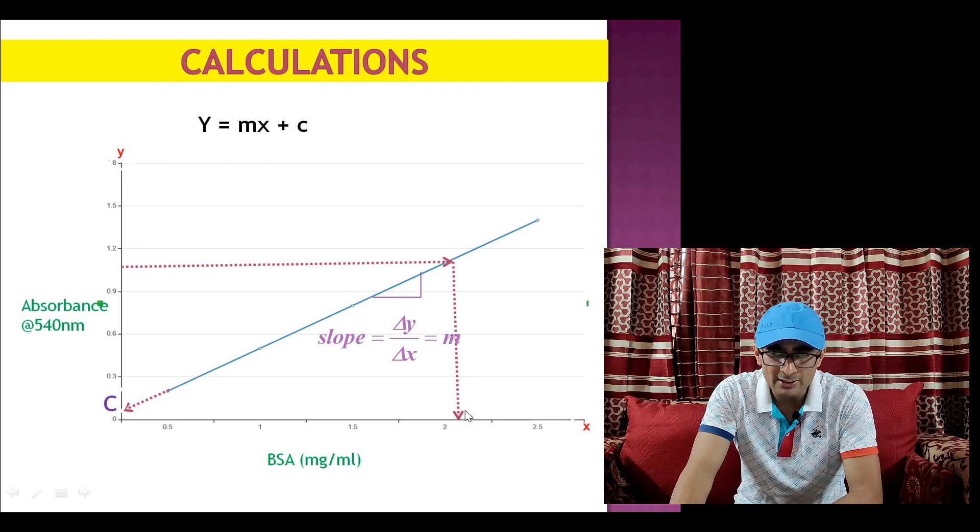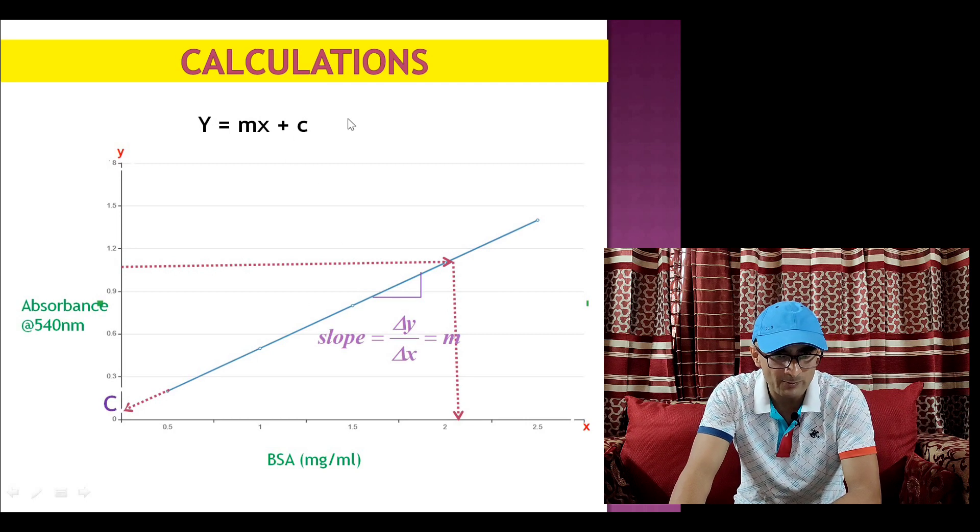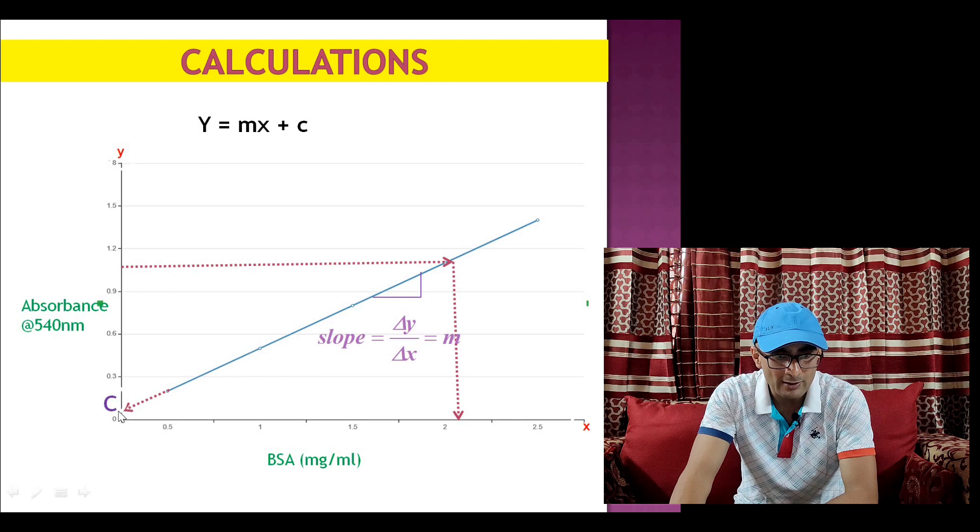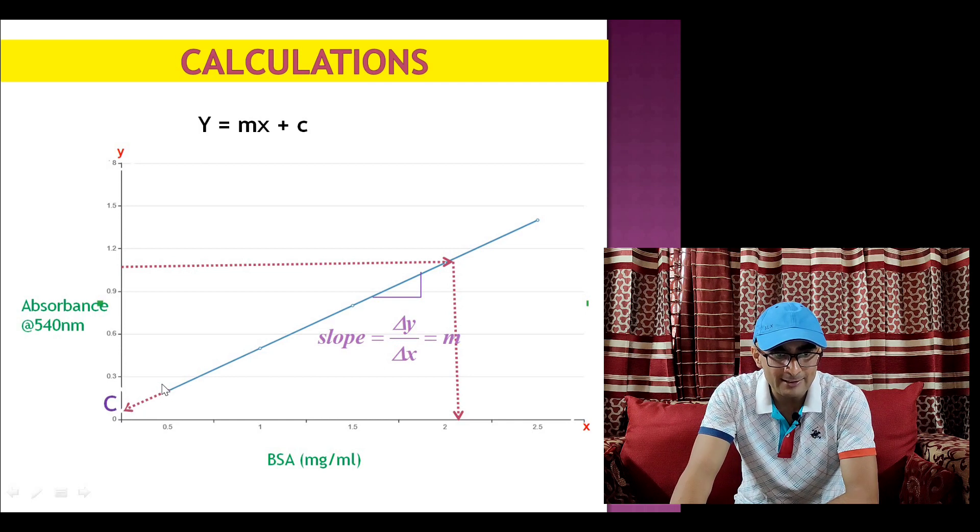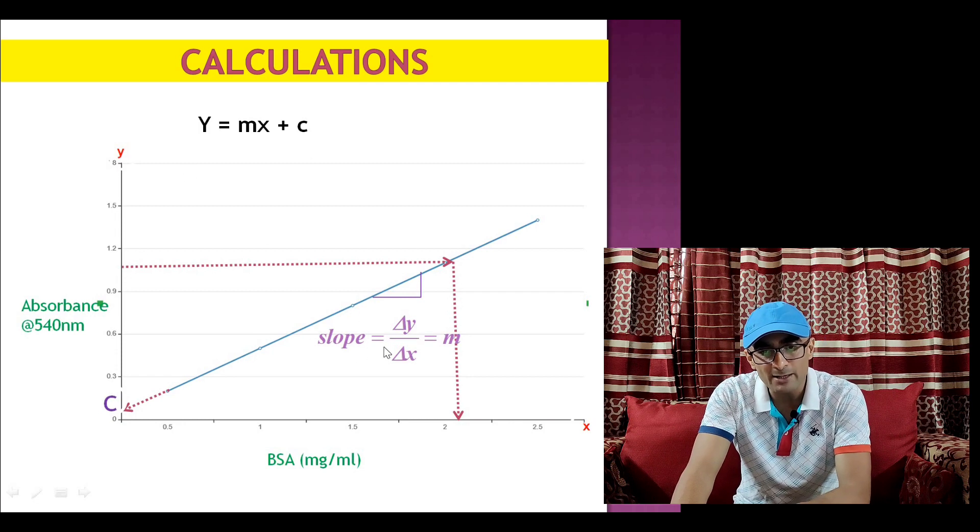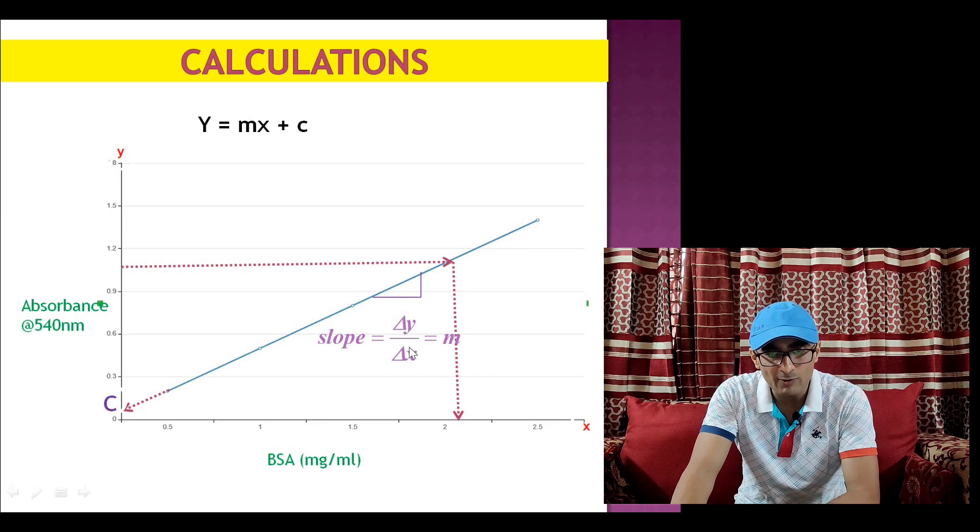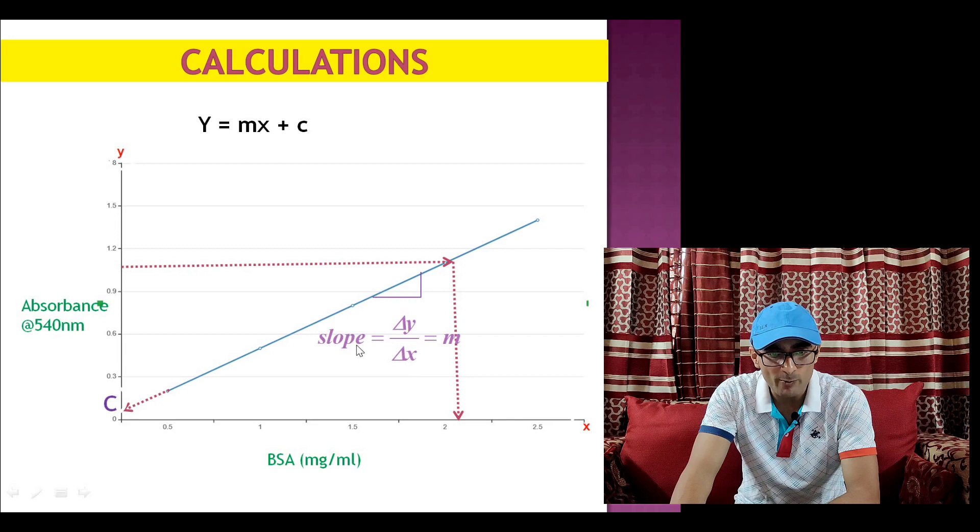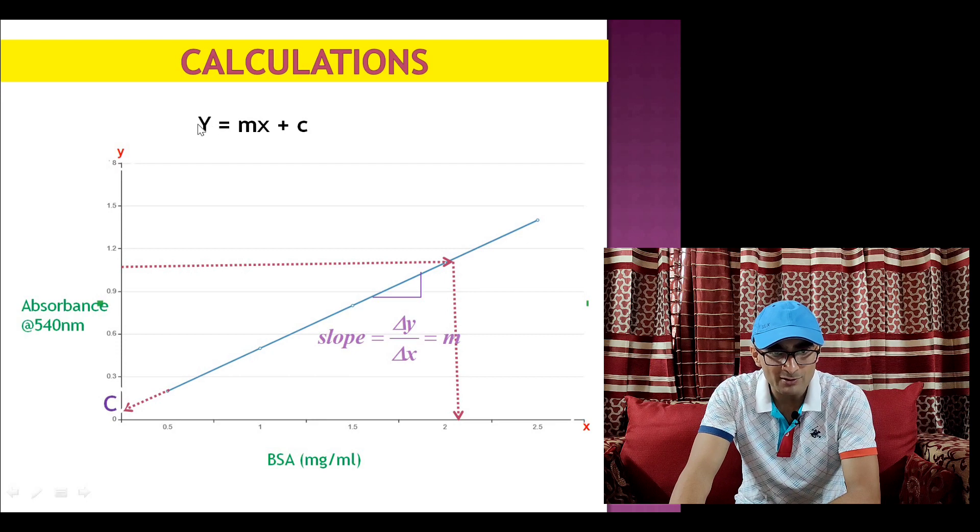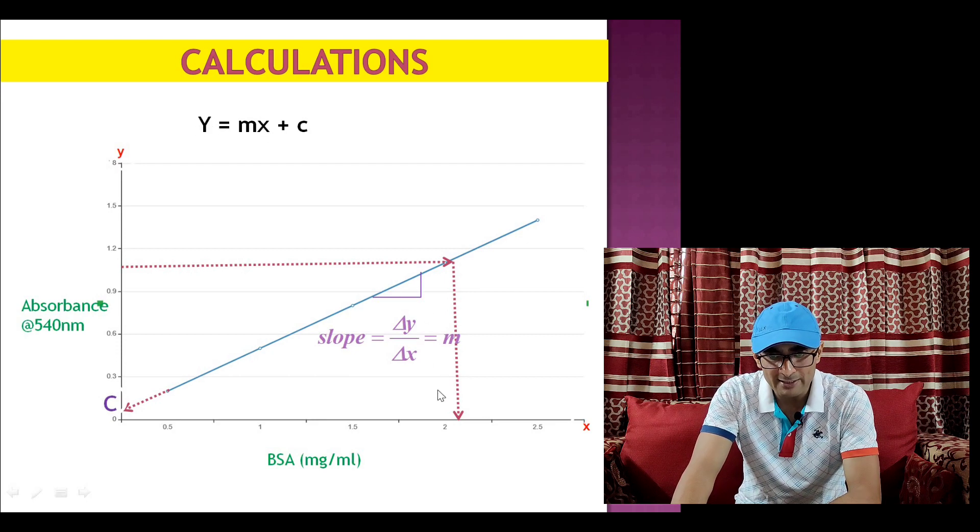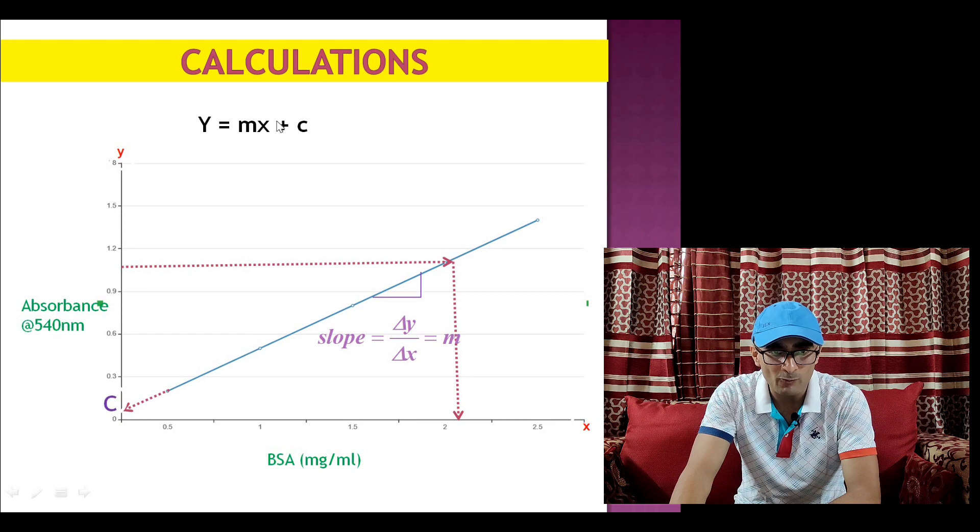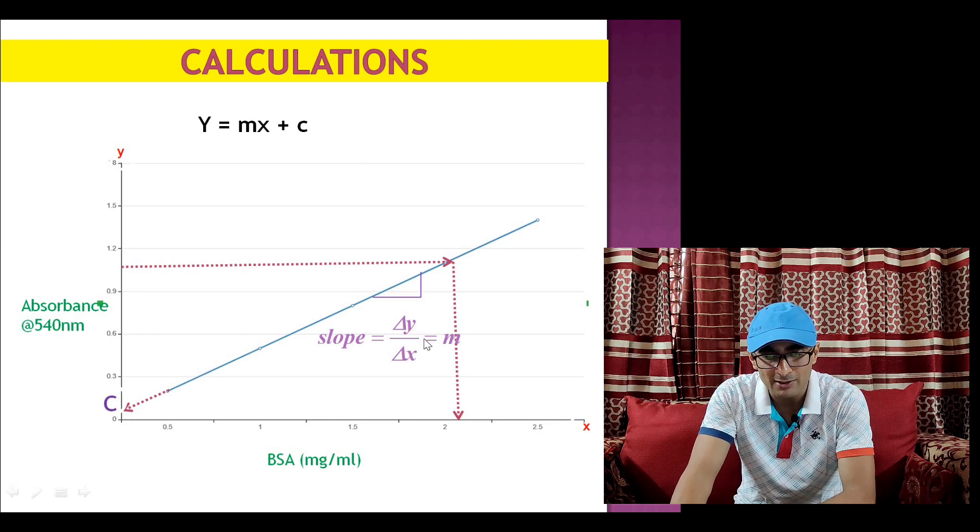Moreover the concentration can be calculated using y equals mx plus c equation. If you extrapolate the graph on the y-axis where x is 0 this will be equal to intercept c, and the absorbance of unknown at y-axis would be equal to y. The slope of graph m can be calculated using dy upon dx. So if you have slope available and intercept available, absorbance is already known for this unknown sample, so value of x, concentration, can be calculated. So from y equals mx plus c also can be used to calculate this concentration.